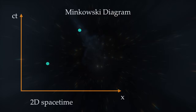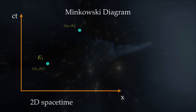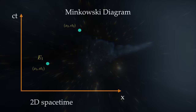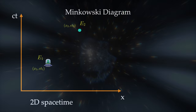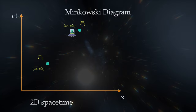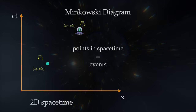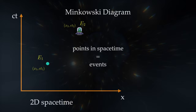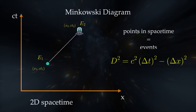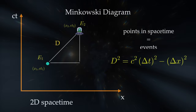Let's take a look at two points, e1 and e2, in this Minkowski diagram. A particle starts at position x1 at time t1, and moves to position x2, arriving at time t2. Each point corresponds to the particle appearing at a specific location in space at a specific time. This is why we call points in spacetime events. The distance between two events is measured with the Minkowski metric: d squared equals c squared times delta t squared minus delta x squared. Notice the minus sign between the time and space components.